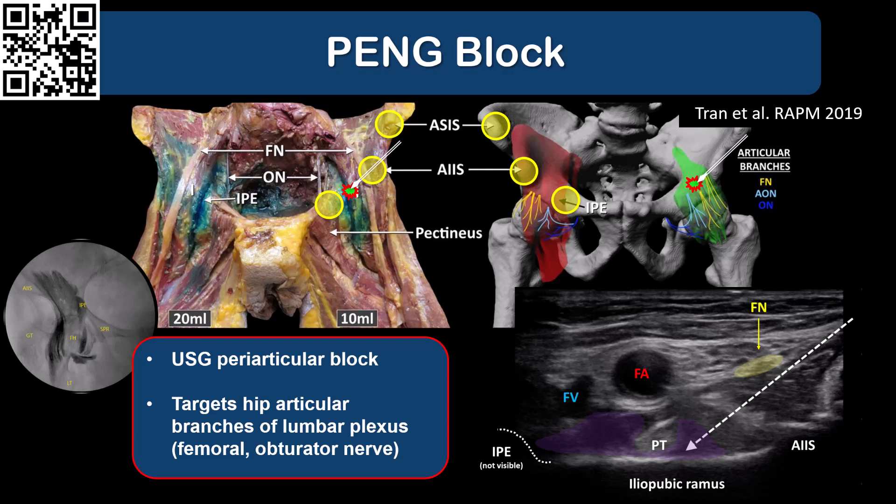The PAIN block is essentially an ultrasound-guided periarticular block that targets articular branches of the hip joints originating from the lumbar plexus, and is thus ideally suited to painful conditions that involve the intracapsular region of the hip joint. However, in large volumes, local anesthetic does appear to also spread to the iliopsoas muscle, and it may also then help if there is spasm contributing to the pain.